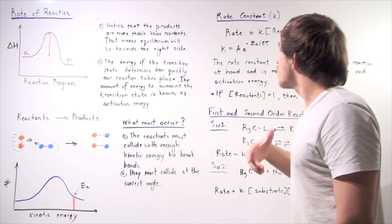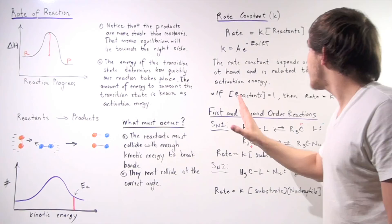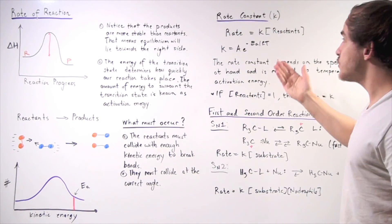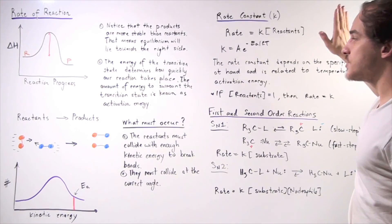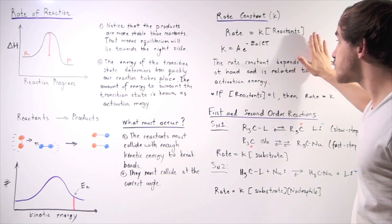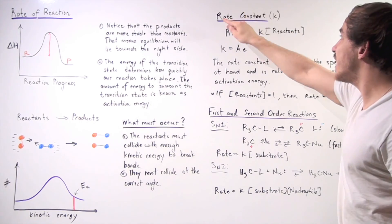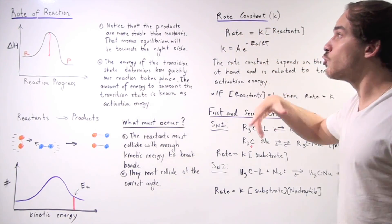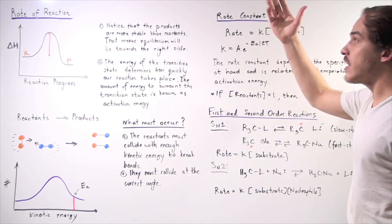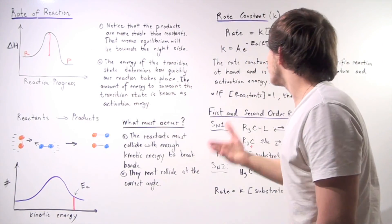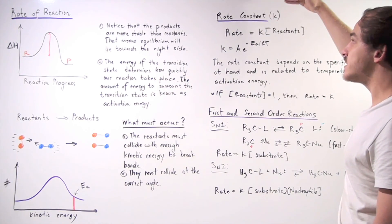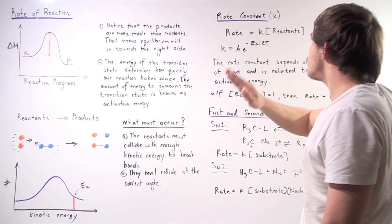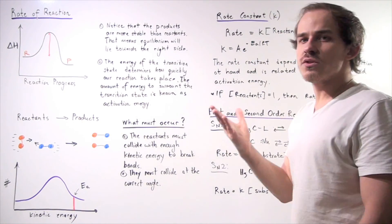Let's suppose we have a first-order reaction. Our rate law, or rate of reaction, is equal to K times our concentration of our reactants. K is known as our rate constant. Rate of our reaction is directly related to our constant — if our constant is higher, then our rate will also be higher, assuming the concentration of reactants is the same.